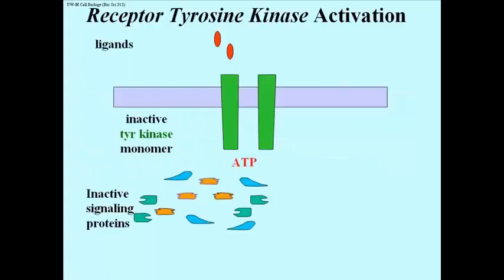This slide shows how receptor tyrosine kinases are activated when signal molecules, here called ligands, bind to the receptor domain. The word ligand is simply a generic term for any effector molecule that binds to a receptor.